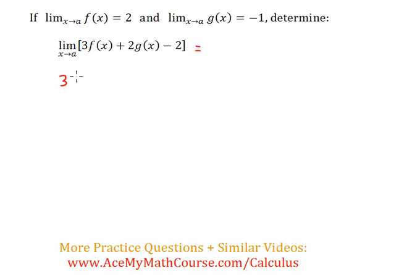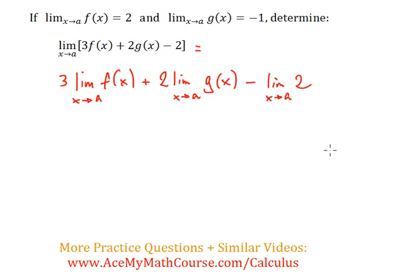How does that work? I can actually apply the limit to these items individually. It can go three times the limit as x approaches a of f(x), plus two times the limit as x approaches a of g(x), minus the limit as x approaches a of 2. You can actually break it all down like this.